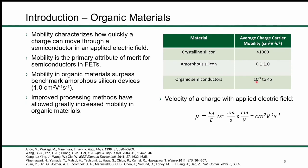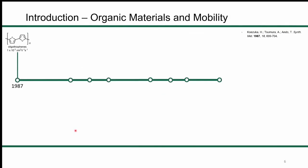Organics have largely replaced many applications that amorphous silicon was initially slated for. Initially, organic semiconductors had mobilities as low as about 10⁻⁵ cm²/V·s, and now the mobility record for an organic semiconductor is 45 cm²/V·s. I have a general scheme showing where those units come from, and a brief history of organic materials and their mobility over time.